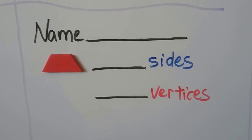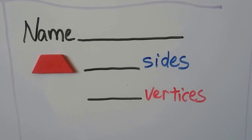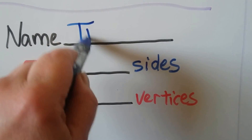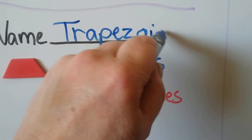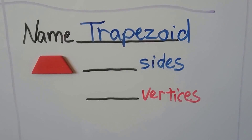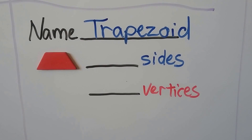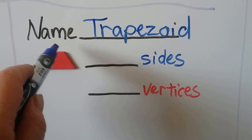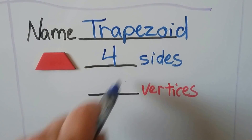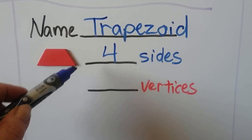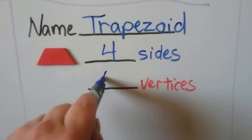Do you remember the name of this one? That's a trapezoid. In some countries, they call it a trapezium. Here in the US, we call it a trapezoid. It has one, two, three, four sides, and it has one, two, three, four corner vertices.